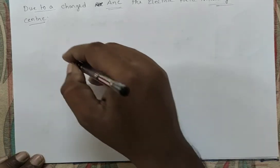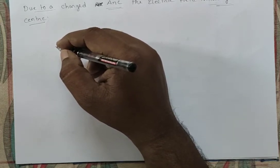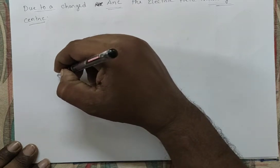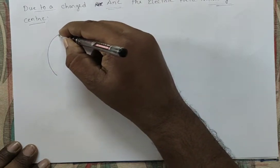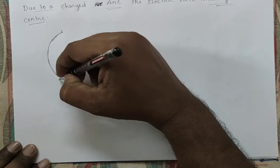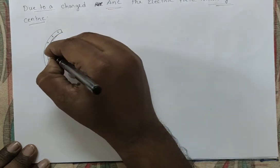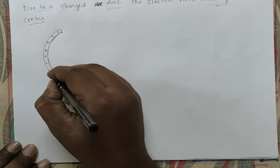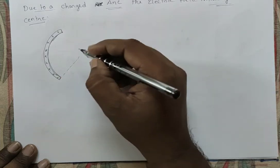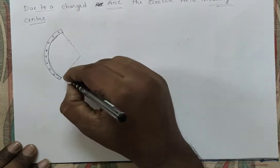We take a charged arc subtending an angle theta. Due to this charged arc, what is the electric field intensity at its center — we will discuss it now. We are not taking a complete circle; we are taking only a charged arc like this.